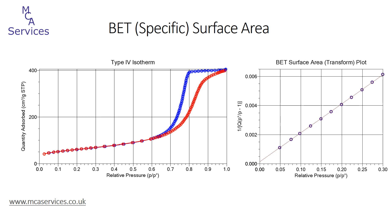There are several pieces of information that we can readily gain from this isotherm, and we're going to start by looking at the lower relative pressure portion of the adsorption isotherm. From this we can calculate the BET surface area of the material. We're going to cover this in much more detail in another video, but we can see the BET transform plot on the right, and the relative pressure range applied to it is 0.05 to 0.30. This provides a BET transform plot of excellent linearity and a positive intercept with the y-axis. The BET surface area for this particular sample is calculated to be 217 square meters per gram.